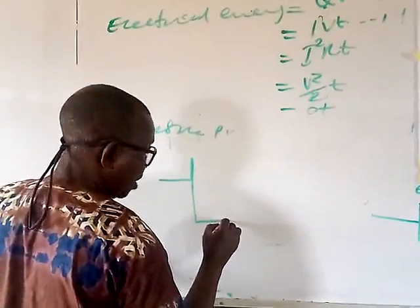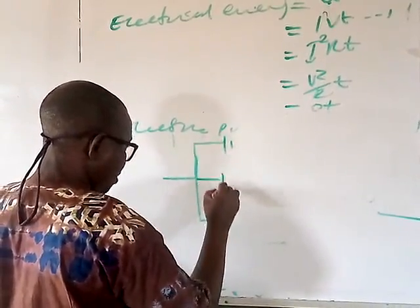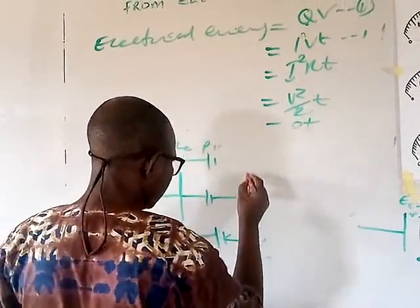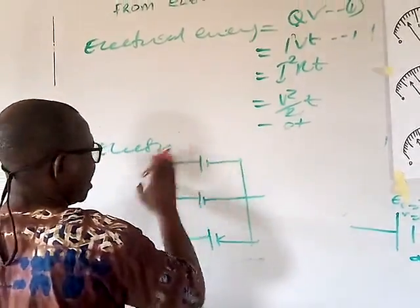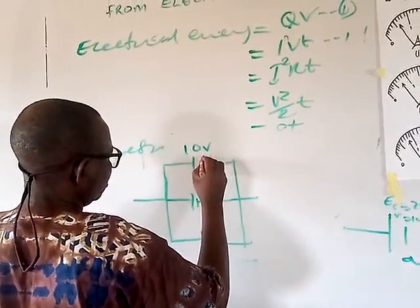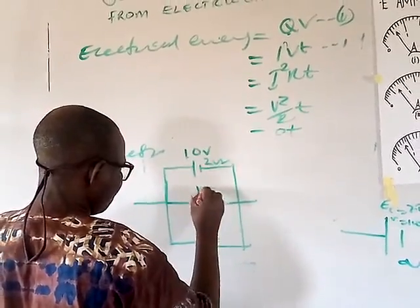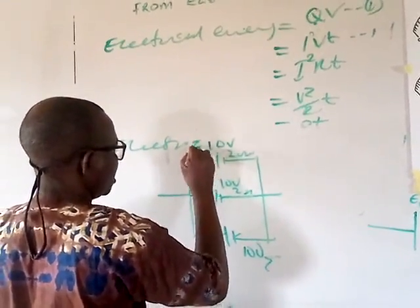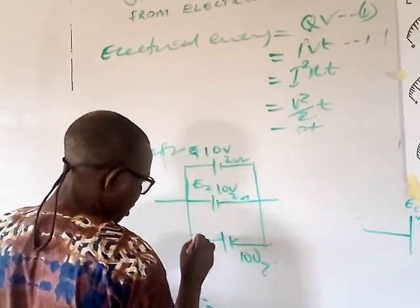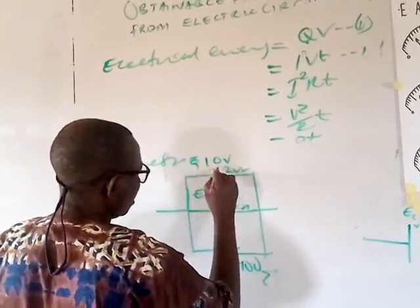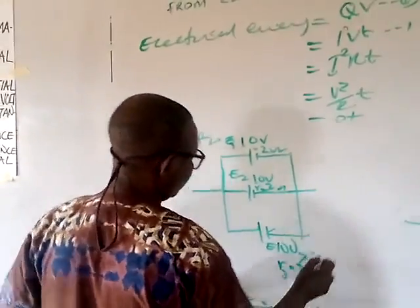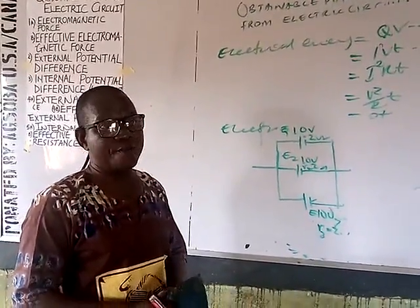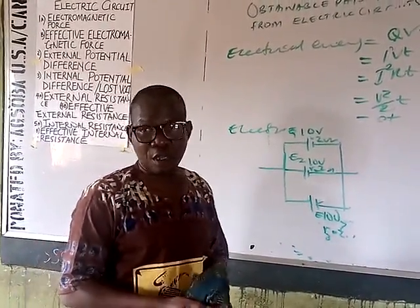(B) The same three cells are now arranged in parallel: E1 = E2 = E3 = 10 V each, r1 = r2 = r3 = 2.0 Ω each. Find the effective EMF and internal resistance. I remain your teacher. God bless you all. Do not panic. Thank you.